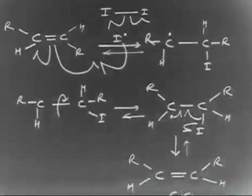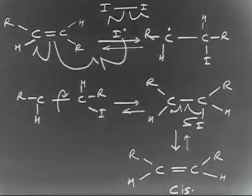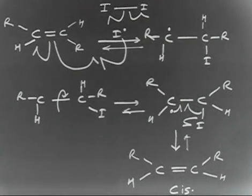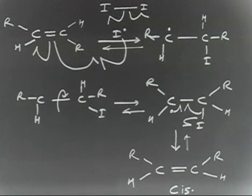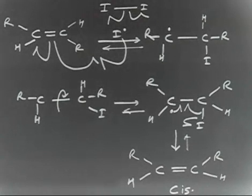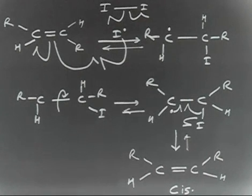So this is the radical mechanism. By using a radical initiator you can convert cis into trans, or trans into cis. This conversion can also be done in the presence of acid. In that case, H+ will add onto the alkene and generate a carbocation, and then you can have rotation about the single bond. You can try that mechanism as well.